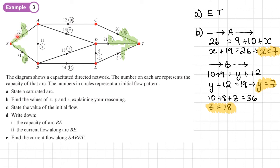Using the source-sink method means that if X or Y were incorrect, it doesn't matter for Z. However, if we used the vertex D method and one of X or Y was wrong, we'd also get Z wrong. Where possible, try to avoid using a previous answer in a maths question, just in case that answer is incorrect.